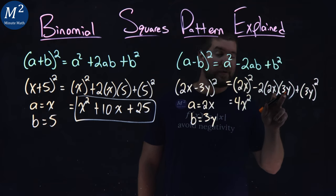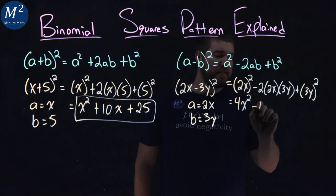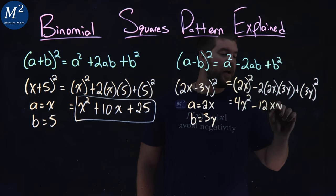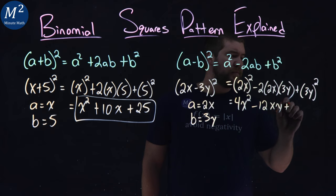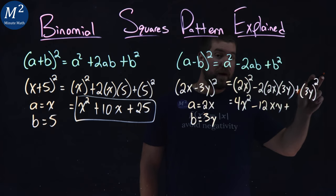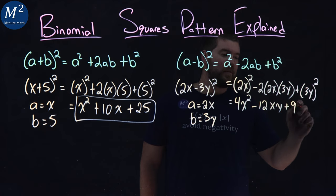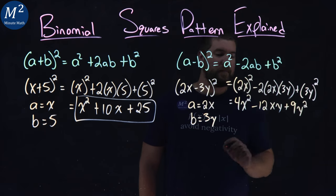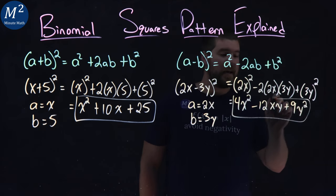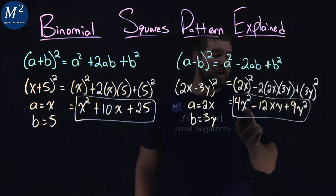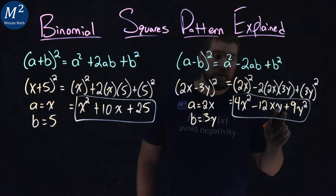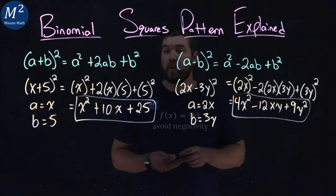Times a 3 is a 12. So we minus a 12 here. x, y are our two variables that are left over. Plus 3y all squared. 3 squared is a 9. y squared is a y squared. And there we have it. The second binomial, b multiplied squared here, is 4x squared minus 12xy plus 9y squared.